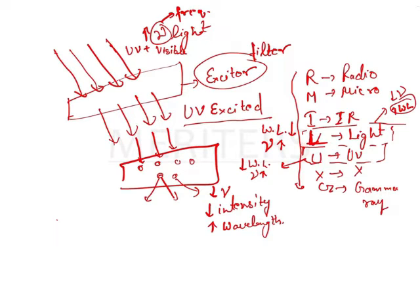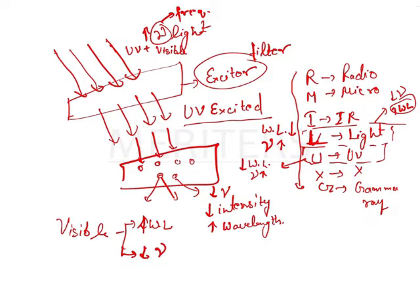The visible light emitted from the specimen has high wavelength and low frequency — that we have to remember. The light emitting from these specimens gives a fluorescent effect, a glowing effect, against a dark background. If a dark background is present, then the specimen will be glowing. This is the basic principle behind the fluorescent microscope.